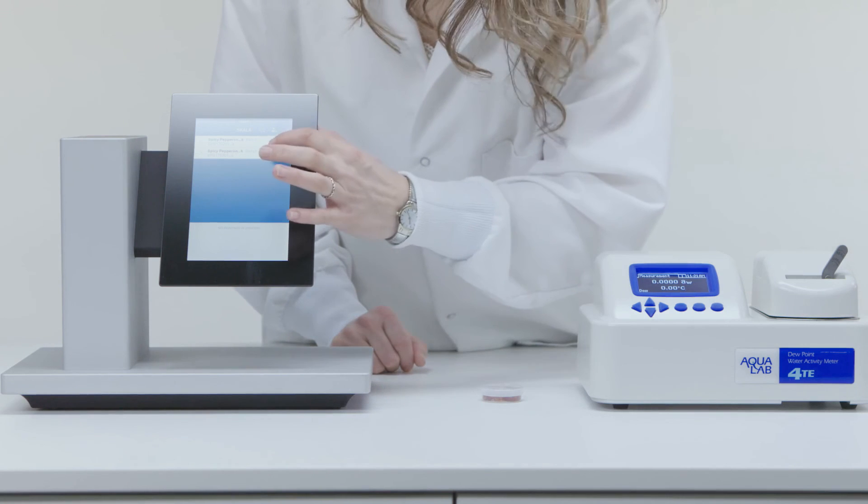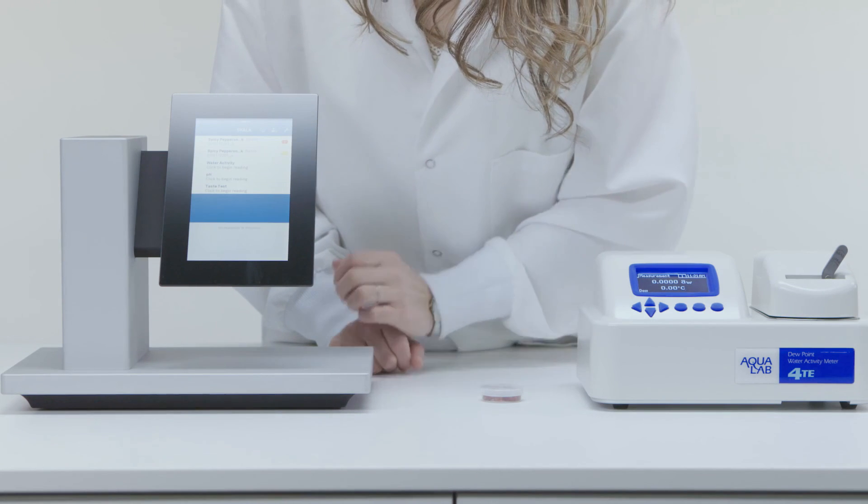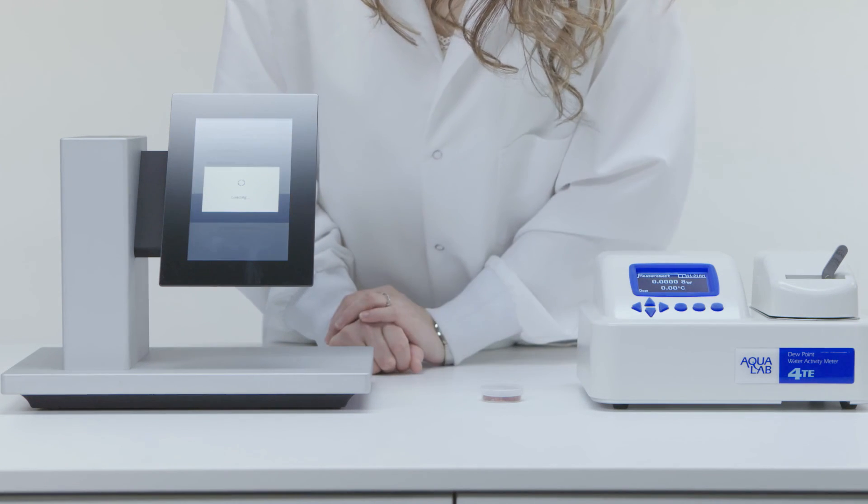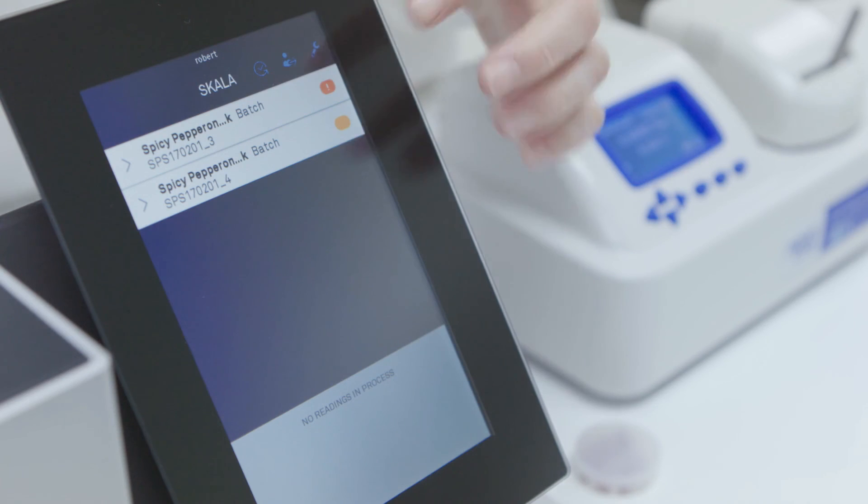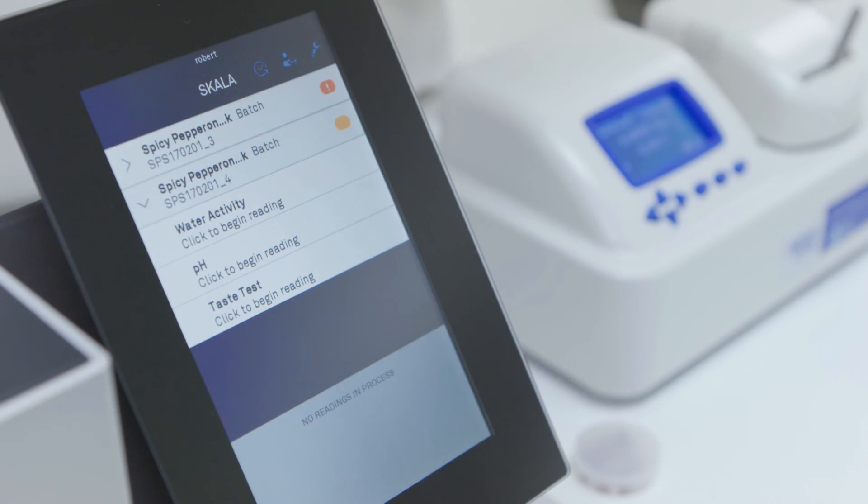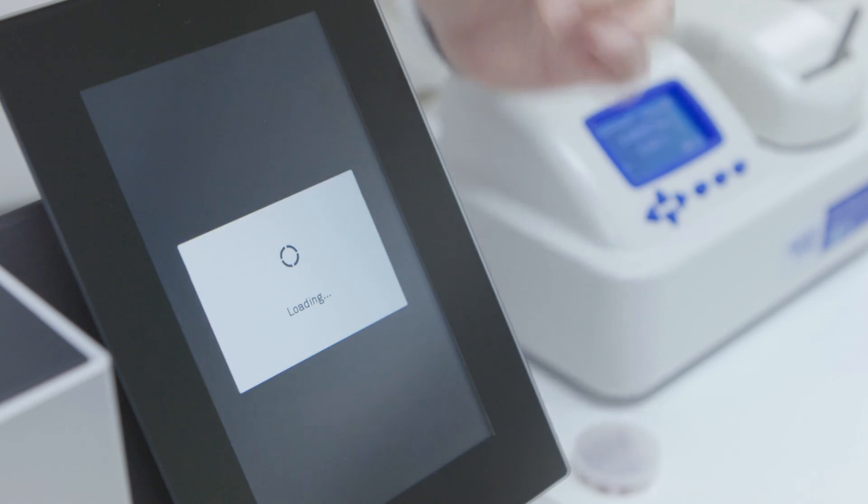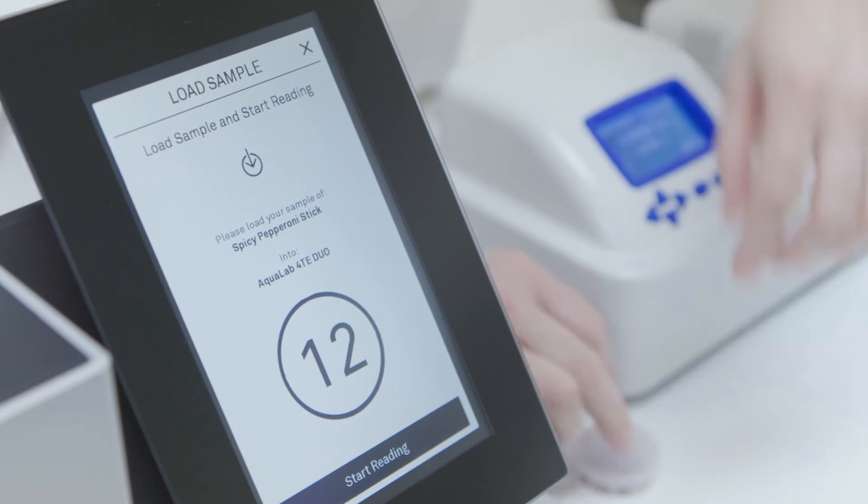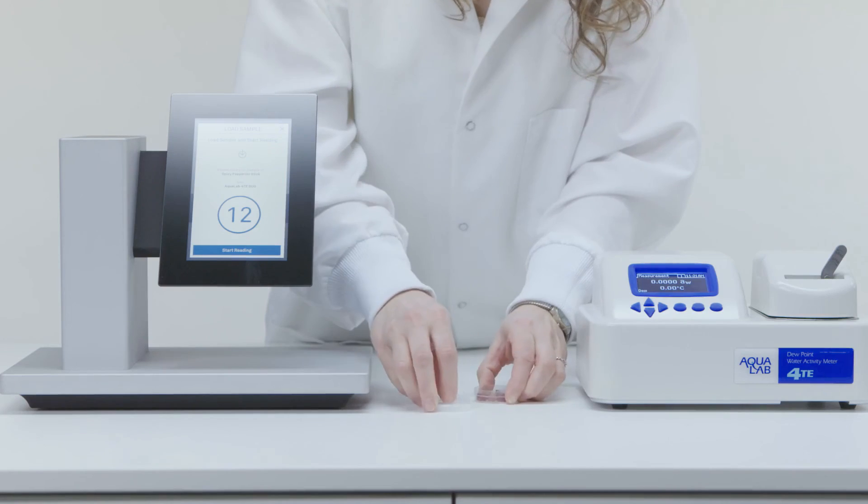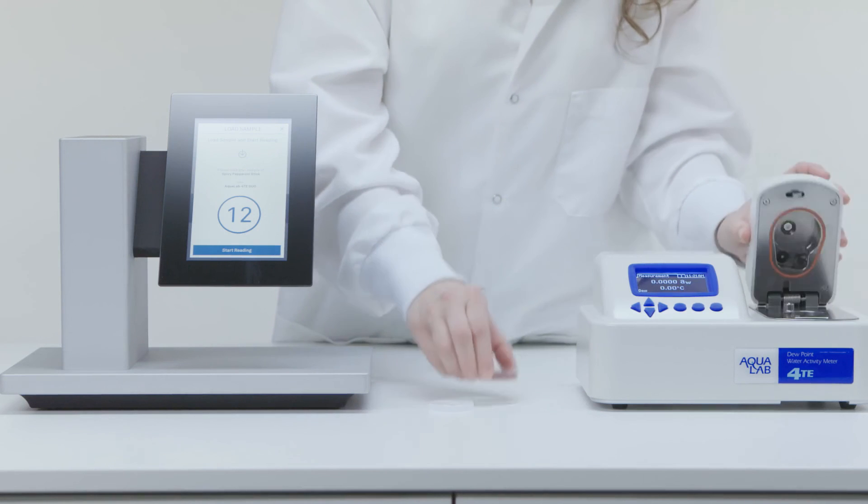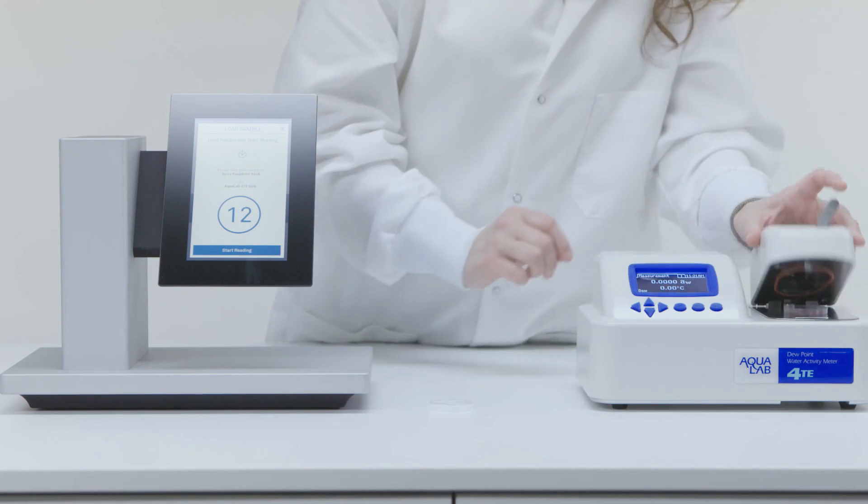We're going to designate the lot number for this sample in Scala, but you can do this manually also. Remove the lid if necessary, and put the sample in the Aqualab. Close the top and slide the lever to read. Scala will listen for and record the reading, but you can also check the reading on the Aqualab screen.